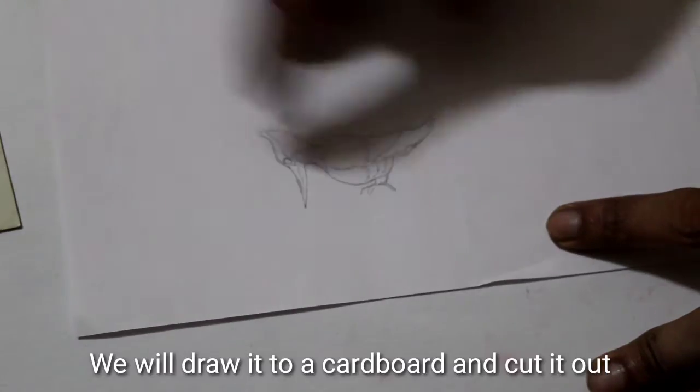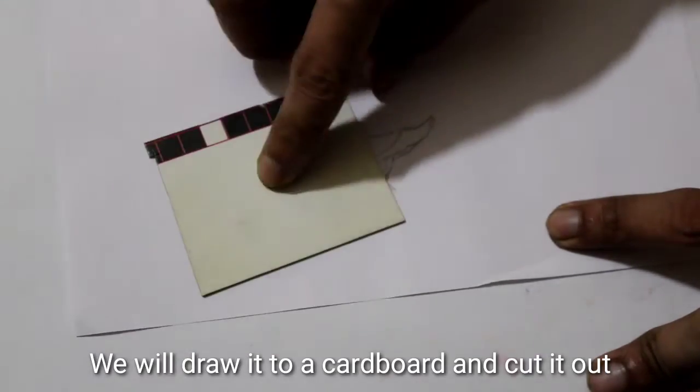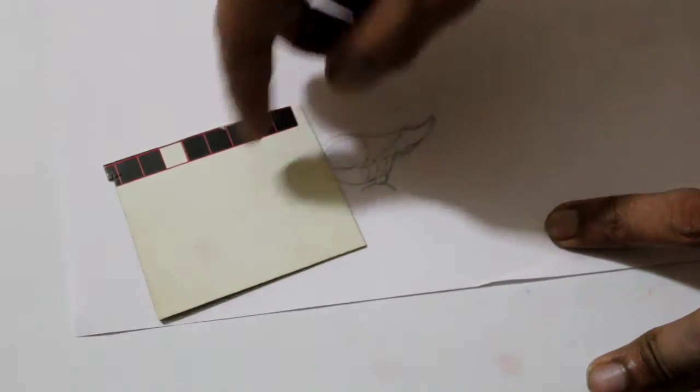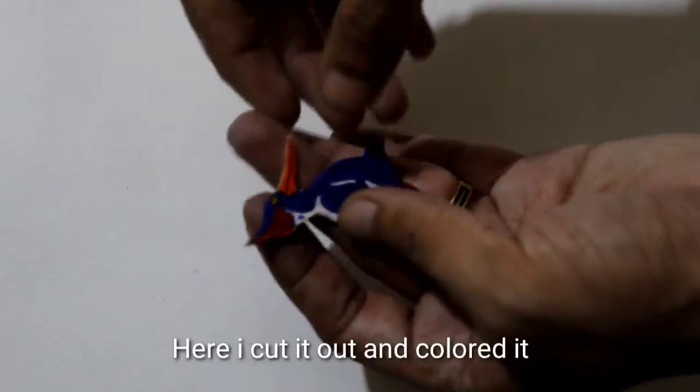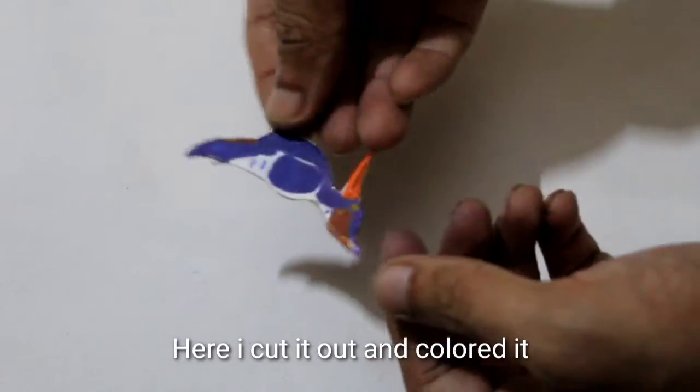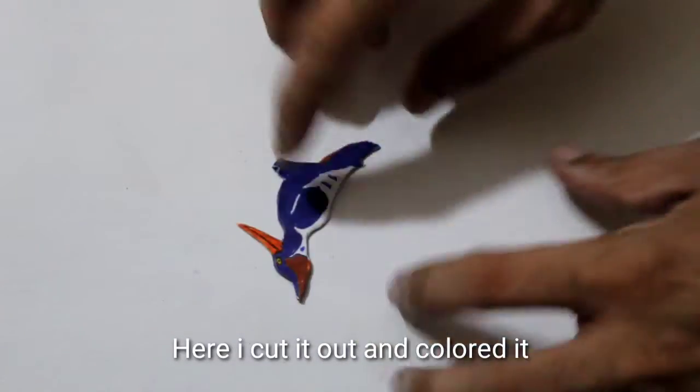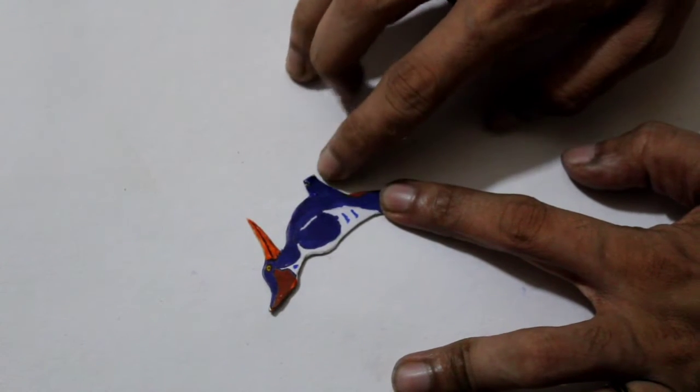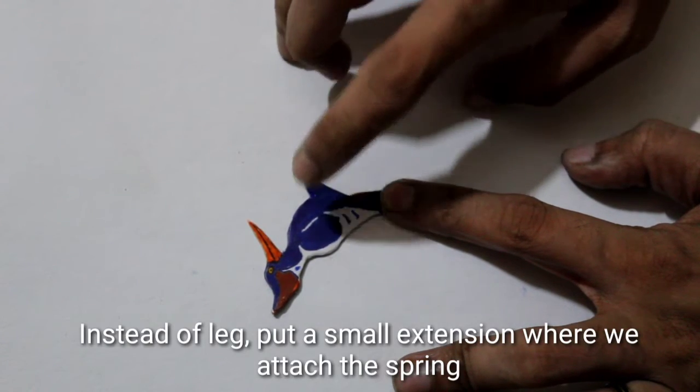Now I've drawn and cut the woodpecker shape on cardboard. I've colored it with colored paper and white paper. I've cut out the pieces including a small portion for the spring mechanism.